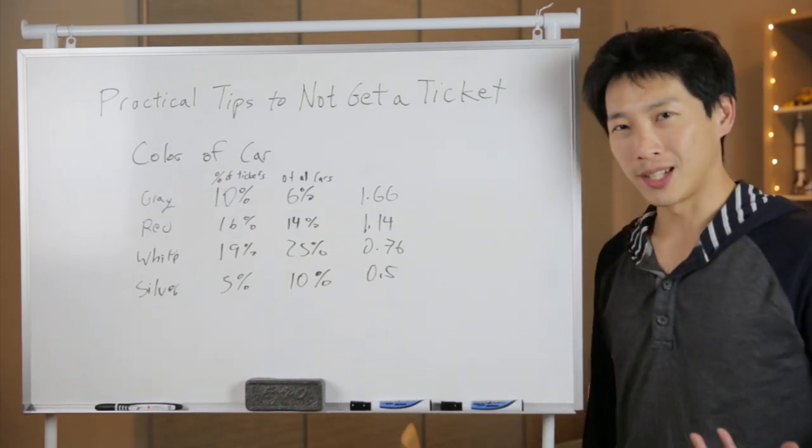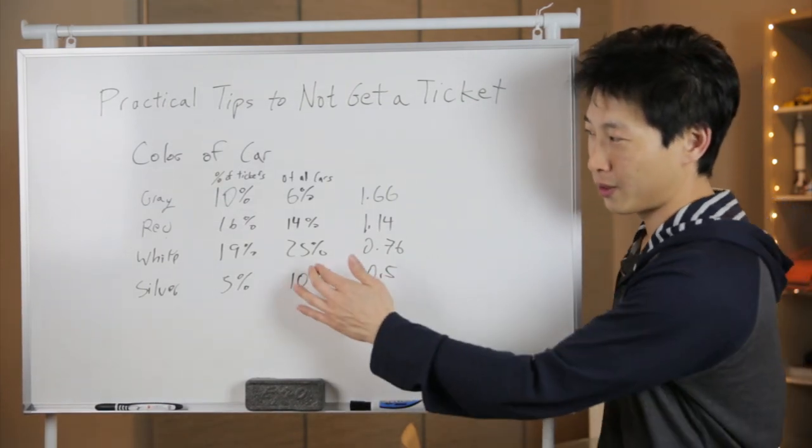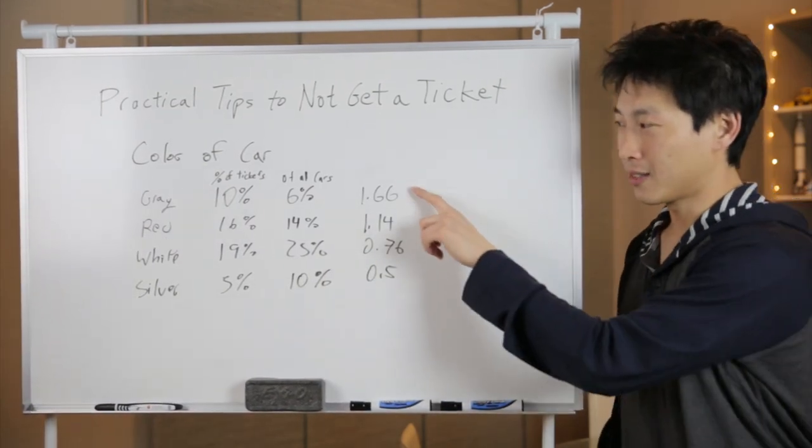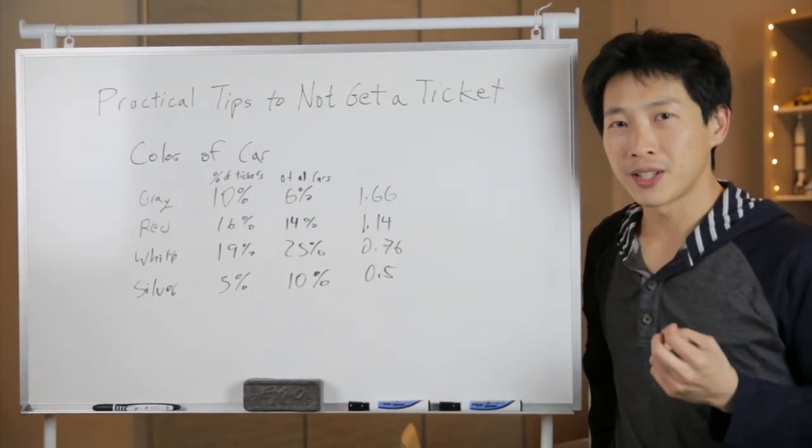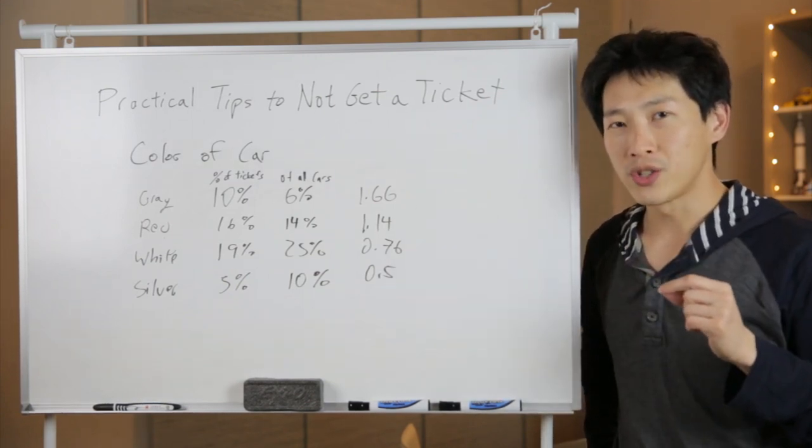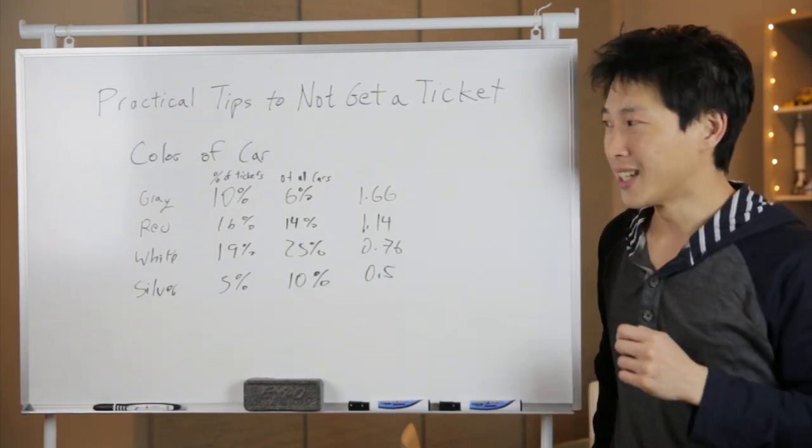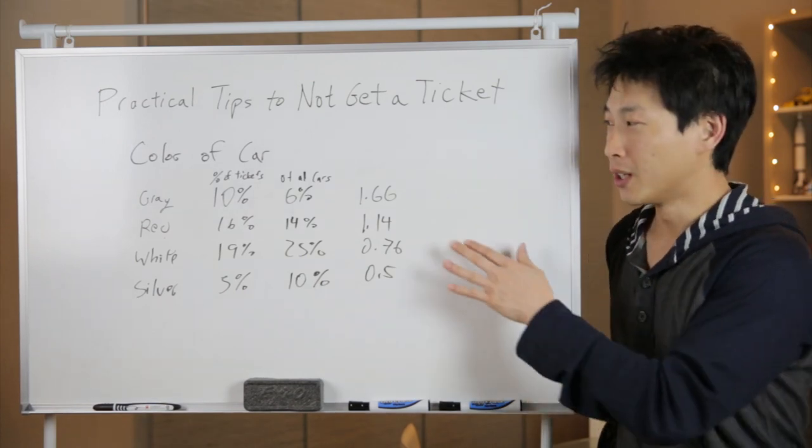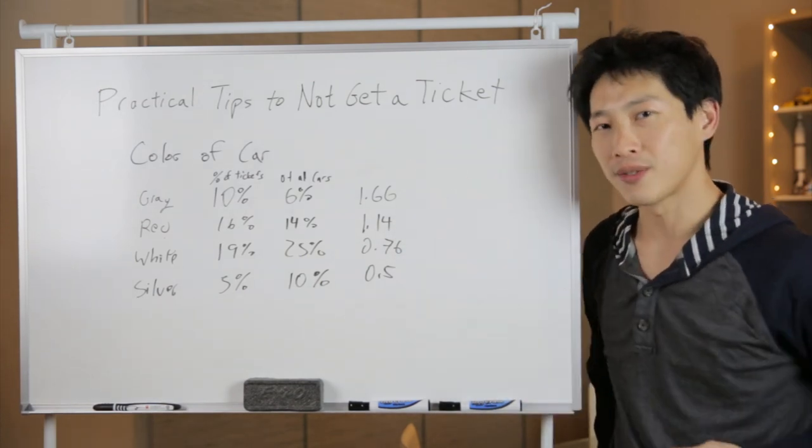Of course, white is the most ticketed car. You don't look at it that way. There are a lot of white cars there, so the chance of that is this ratio. Therefore, it's good to keep in mind that if you have a high ratio car of getting ticketed, it's a little bit better to watch out and be extra careful to offset this higher chance of getting a ticket.